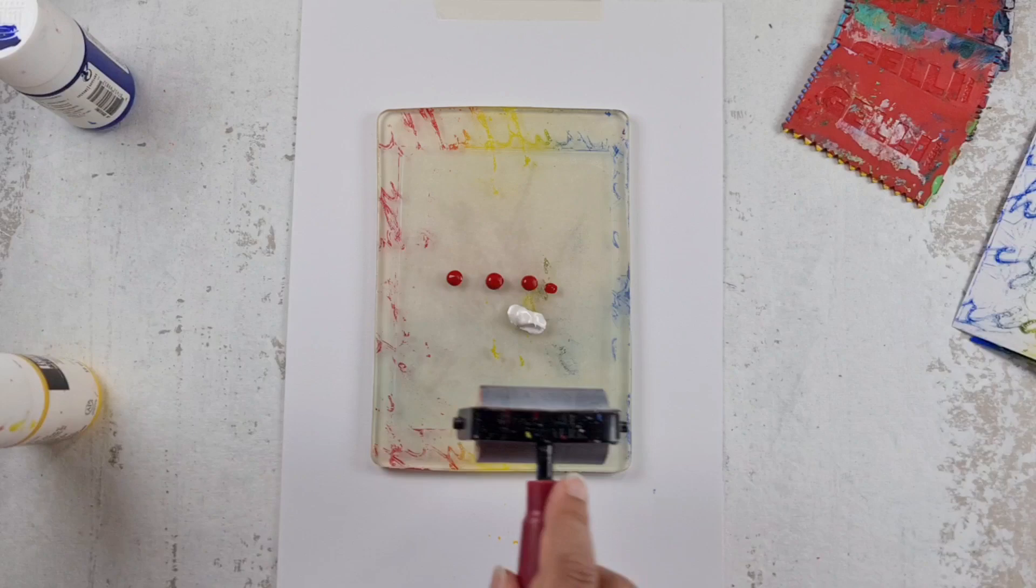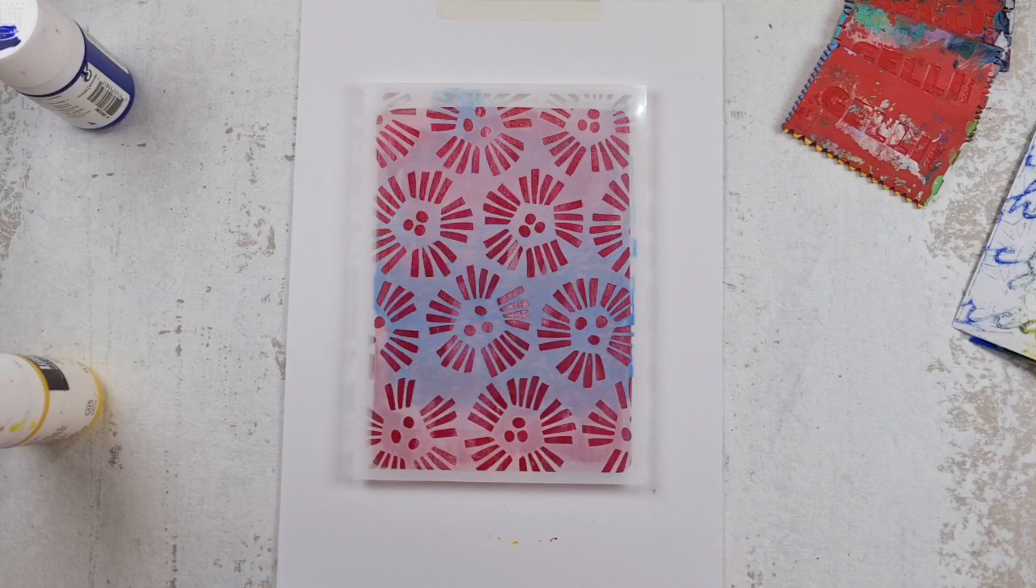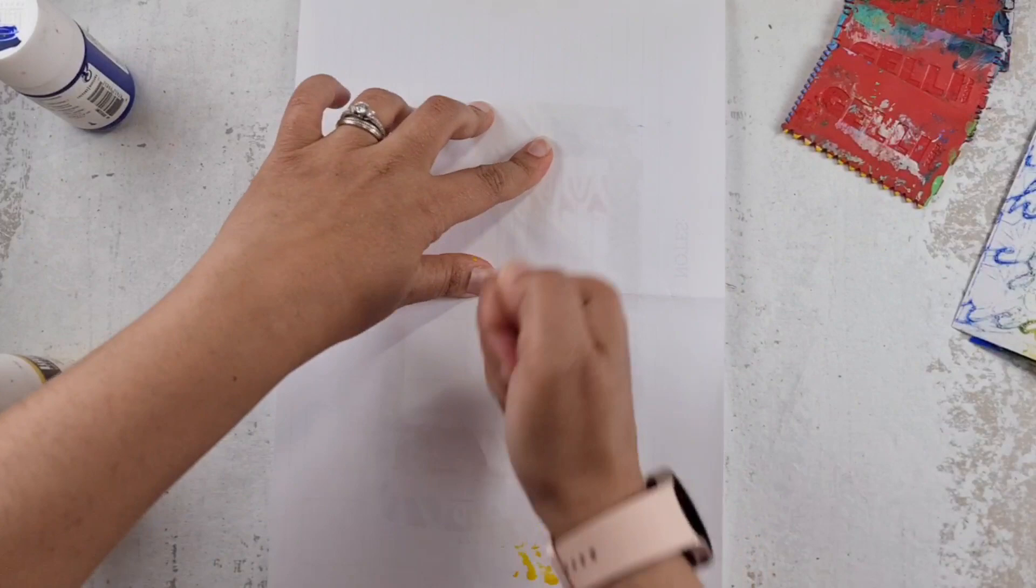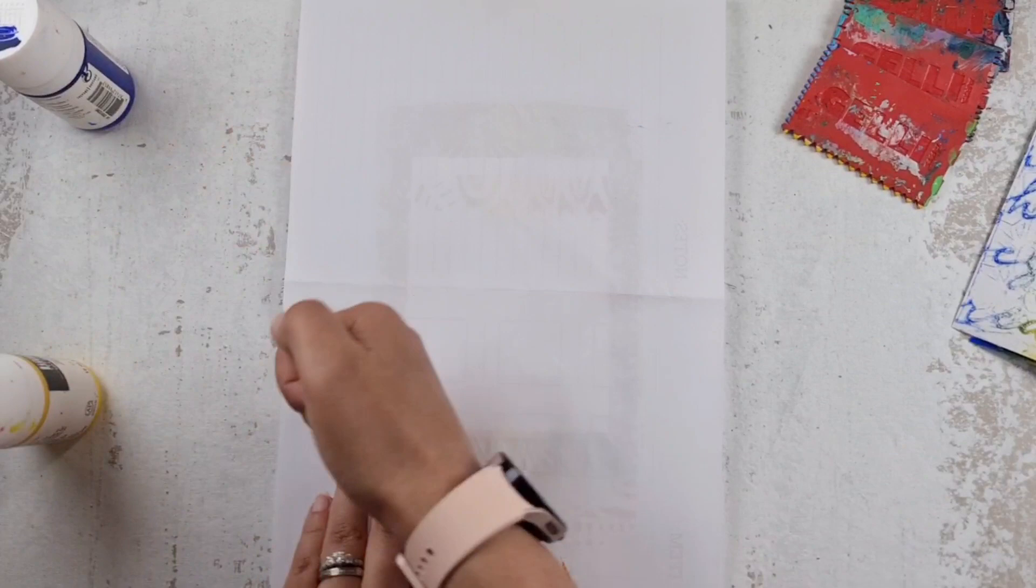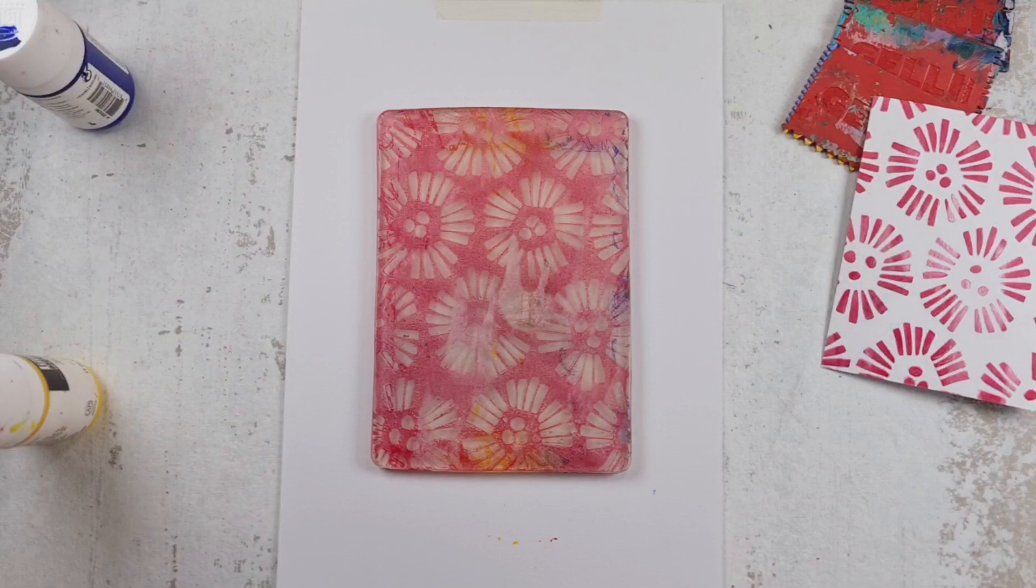And just keep pulling print after print after print. And you'll notice that I am not cleaning my gel plate in between my prints. And what this does is, this is entirely optional. If you want your colors to be nice and crisp, then you can clean your gel plate in between each print. But I like to have that grunge that you get when you pull paint off that is from the previous prints onto the new prints. It's the wet paint that is pulling, is working like almost like a glue and pulling that paint off onto the paper.